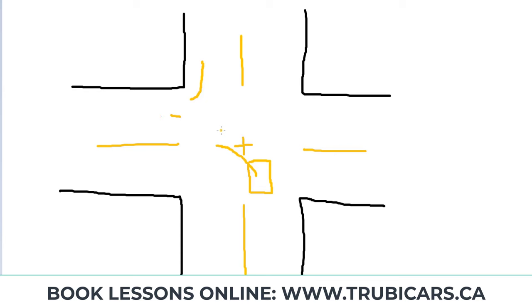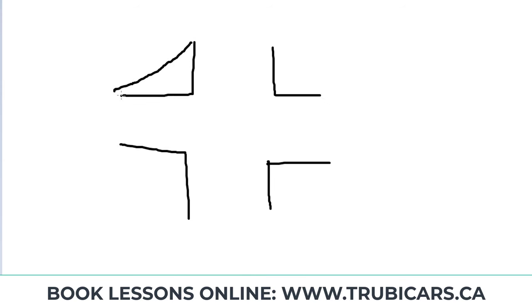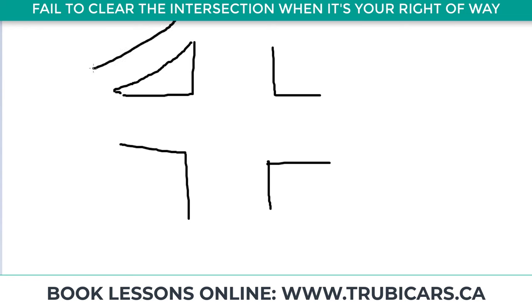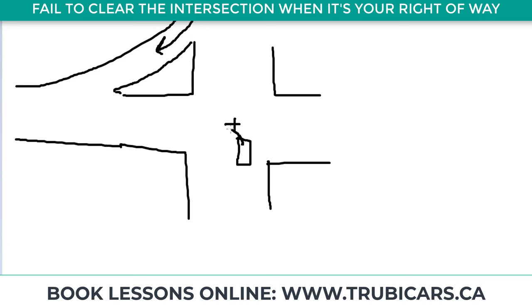The next critical error is the opposite situation: you're turning left and someone else is turning right but they do have a yield sign. That means you get the right of way — they have to wait for you. If you hesitate and let them go first anyway, that becomes a critical error.